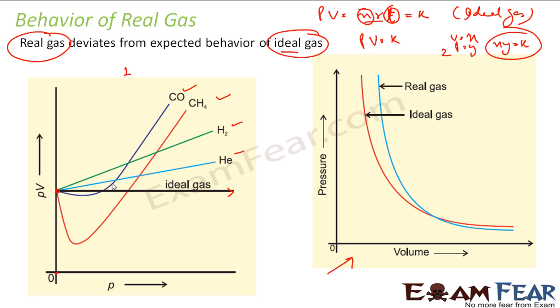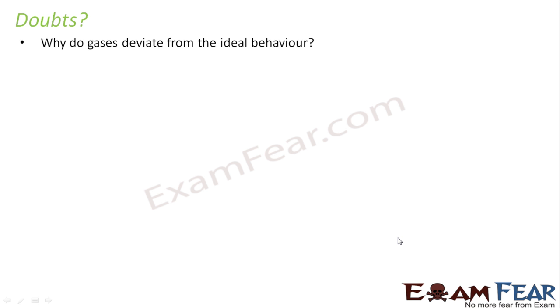At zero pressure, the values match. So with this discussion, you must be having a lot of questions in your mind. Why do gases deviate from ideal gas behavior? Why do real gases deviate from ideal gas?